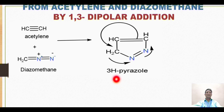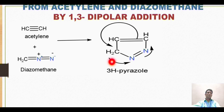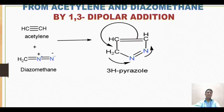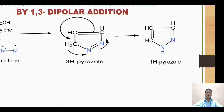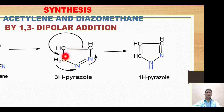The 3H-pyrazole is quite unstable and tautomerizes to the more stable 1H-pyrazole form. In this tautomerism, one hydrogen migrates onto the nitrogen to form an N-H bond. With this migration, the double bonds shift positions accordingly — one double bond shifts over and the other shifts to the adjacent position — giving the formation of 1H-pyrazole.